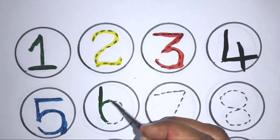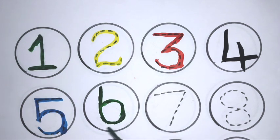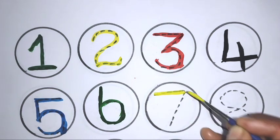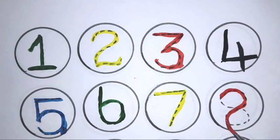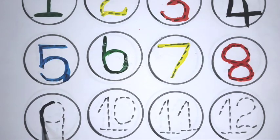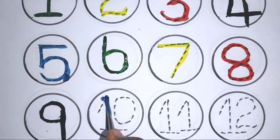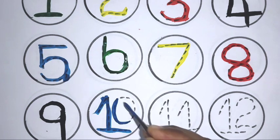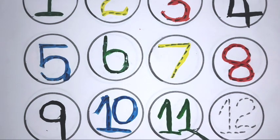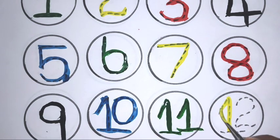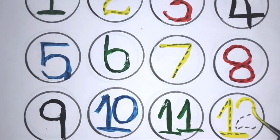Next green color, six. Next yellow color, seven. Next red color, eight. Next black color, nine. Next blue color, ten. Next green color, eleven. Next yellow color, twelve.